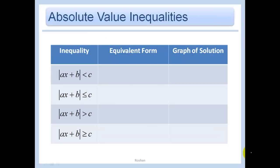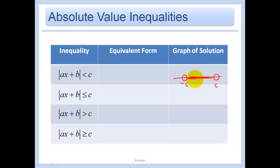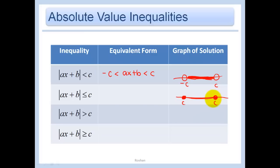Absolute value inequalities. If the absolute value of ax plus b is less than c, that means ax plus b is less than c units away from 0 on the number line — it's somewhere between negative c and c, not including the endpoints because it's strictly less than. If it's less than or equal to, those become closed circles.